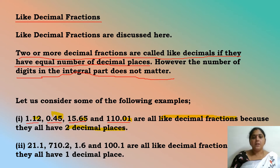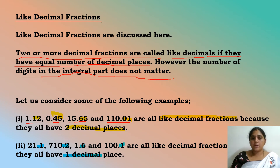Now the next example: after the decimal point there is only one digit in each number — one digit, one digit, one digit. These are also like fractions because after the decimal point we have only one decimal place value.